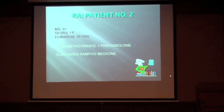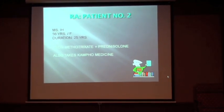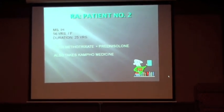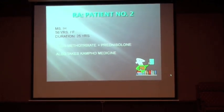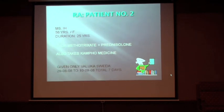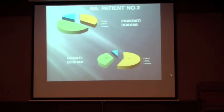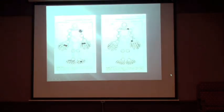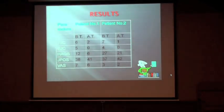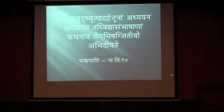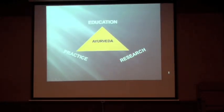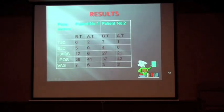The second patient is already on Methotrexate and Prednisolone, but still wanted to see what Ayurvedic treatment could offer. We strictly believed we would not give combination treatment — no internal medicines were given to her, only Valuka Sveda. This is her Prakriti and Vikriti assessment. These are the results for both patients: total joint count was 6 before and 2 afterwards for patient one; 7 before and 1 after for patient two.